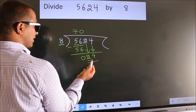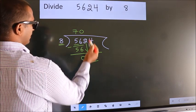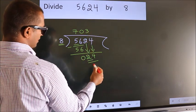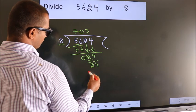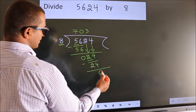When do we get 24 in the 8 table? 8 times 3 is 24. Now we subtract. We get 0.